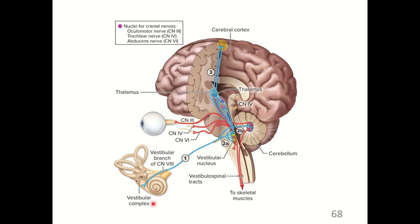Equilibrium pathway signals from the macula or crista ampullaris are conveyed by the vestibular nerve and terminate in the medulla oblongata or the cerebellum. The medulla oblongata helps control reflexive eye movements and balance; the cerebellum helps coordinate balance and muscle tone. Visual input also contributes — when vestibular signals and visual input don't match, nausea, dizziness, and vertigo can result.